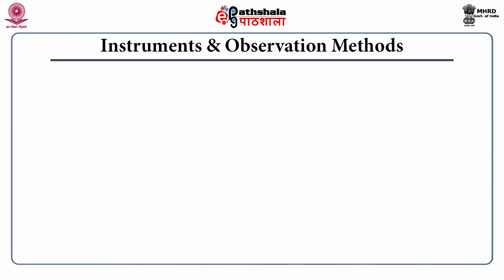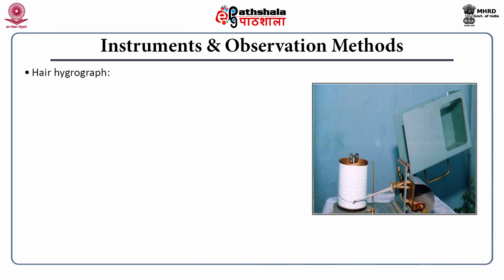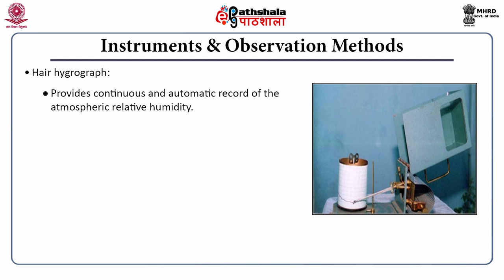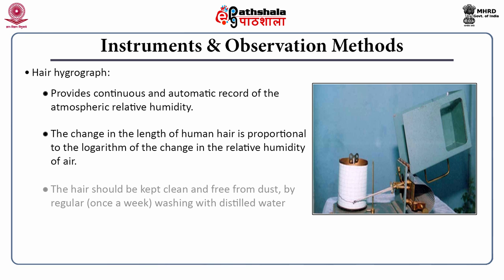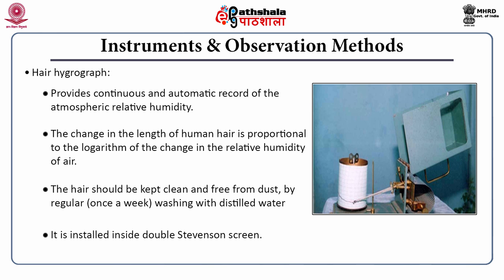The next equipment is the hair hygrograph. Hair is used as the sensing element because human hair is sensitive to the relative humidity of the air. Its length changes proportional to the logarithm of the changes in relative humidity. The hair should be kept clean and free from dust, and regularly washed with distilled water. This equipment is also placed inside the double louvered Stevenson screen.